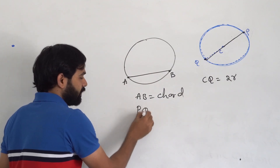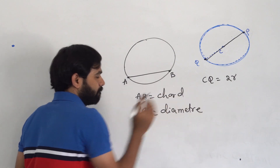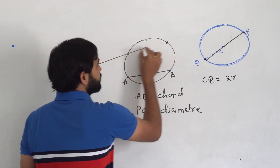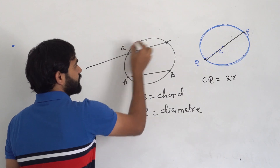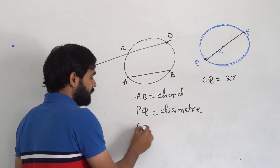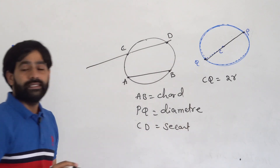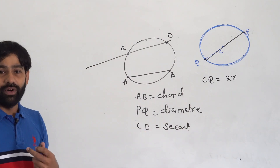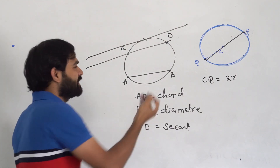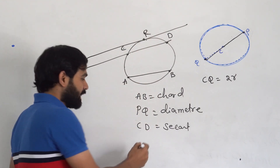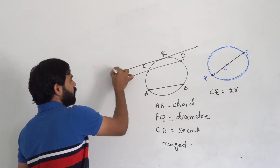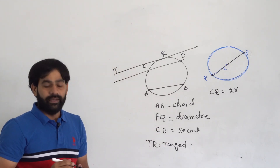If I extend a line through two points on the circle — say points C and D — such that it goes even after intersecting the circle, what do you call that? That is called the secant of the circle. Now suppose the line is in such a way that it is just touching the circle at one point — let's say point R. What do you call that? That is called the tangent. So TR is called the tangent.